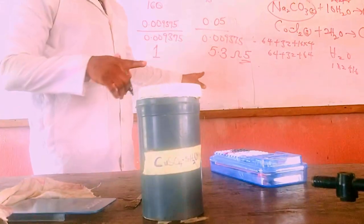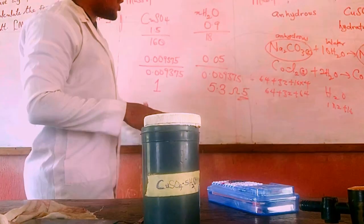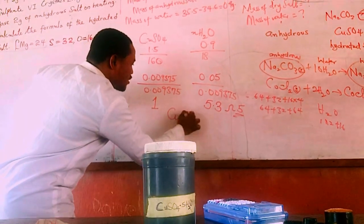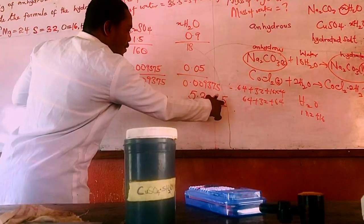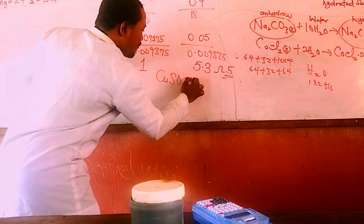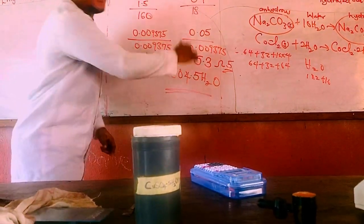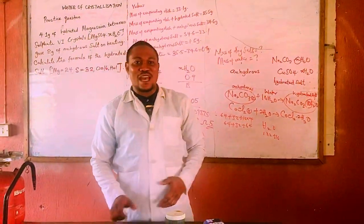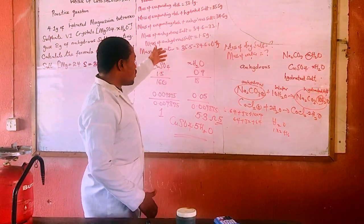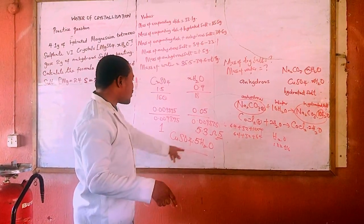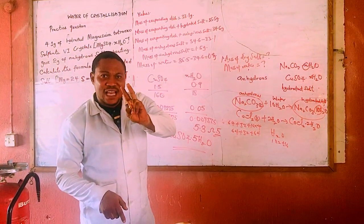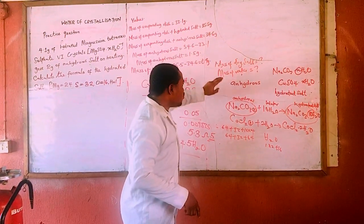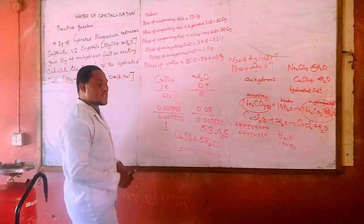So the result is approximately 5, confirming that the salt is CuSO₄·5H₂O — copper(II) sulfate pentahydrate. We have been able to verify practically that the water of crystallization is 5. Remember: you need the mass of the dry salt and the mass of water for any water of crystallization calculation.